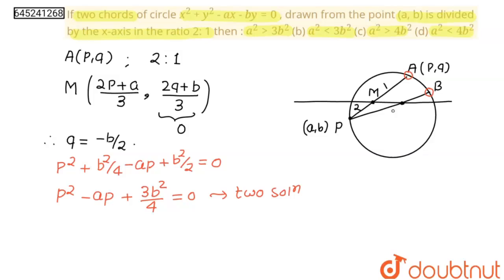So there should be two values of p. For two solutions, the discriminant should be greater than 0.